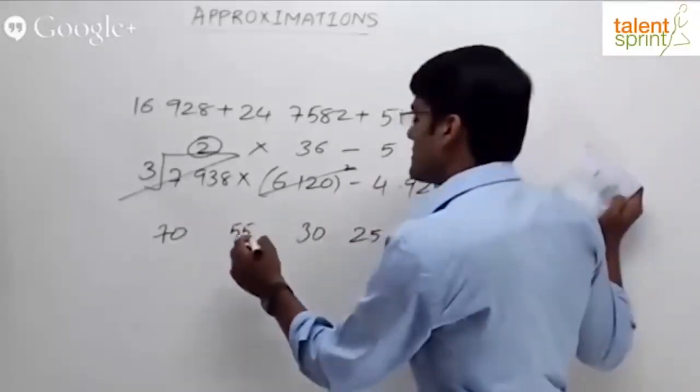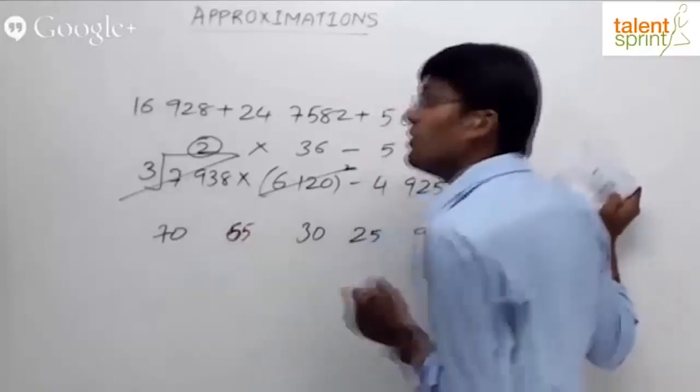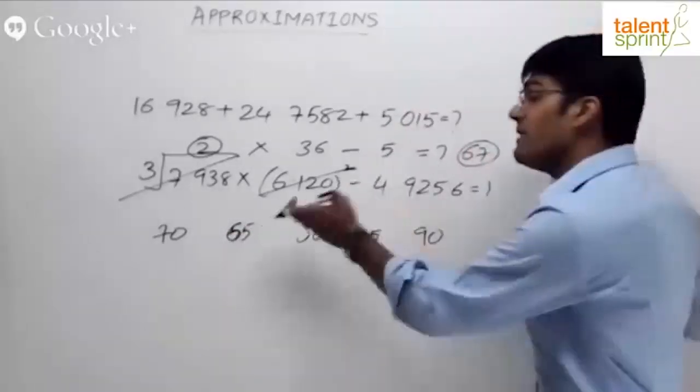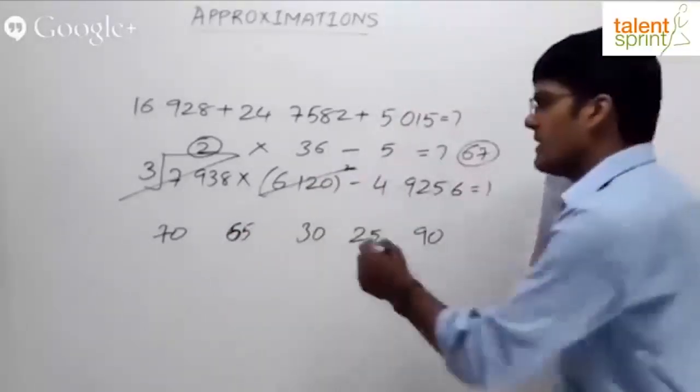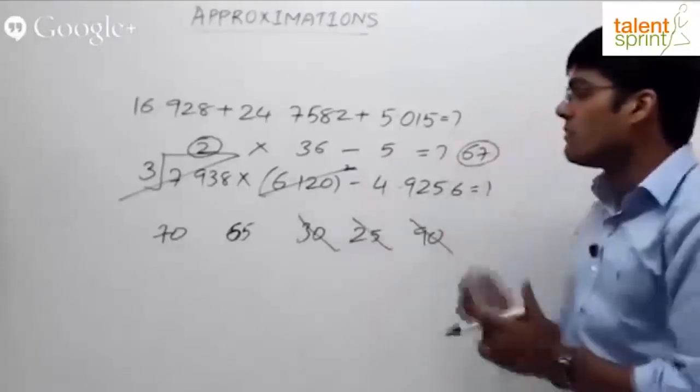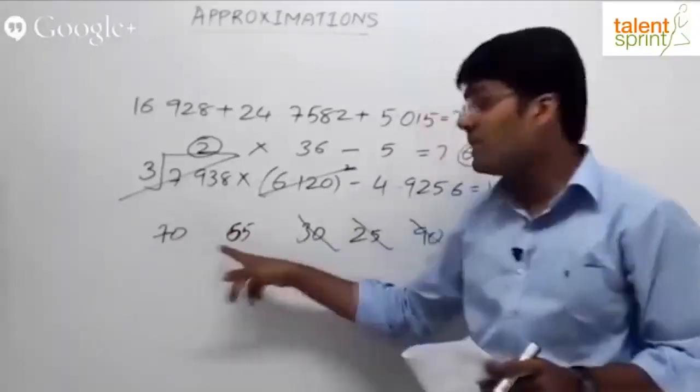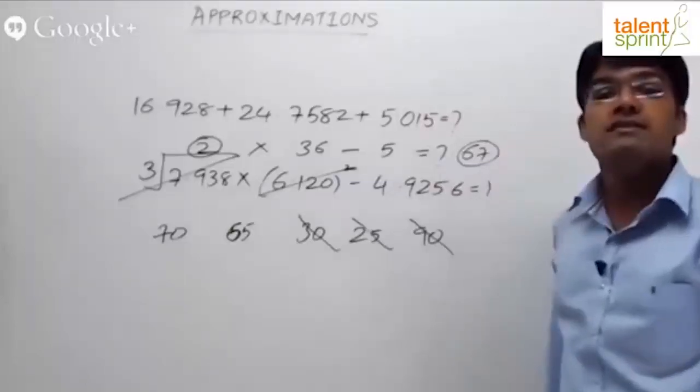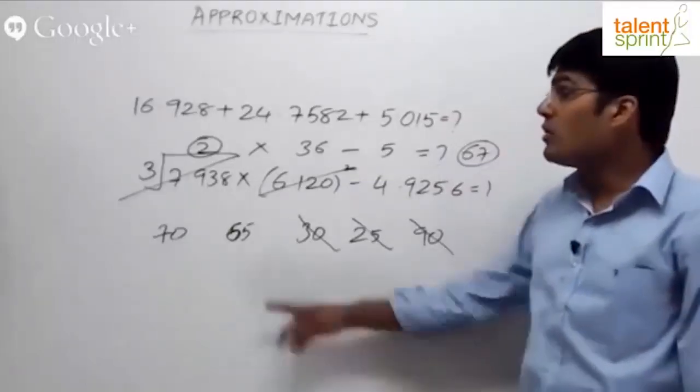Let's say here if we've got approximately 67, but there are two options - one is 70, the other is 65. In that case, what do we do? 70 is close to 67, 65 is also close to 67. 30, 25, 90 are ruled out, but these two are possible. 70 is possible, 65 is also possible, and our calculation is approximately 67.